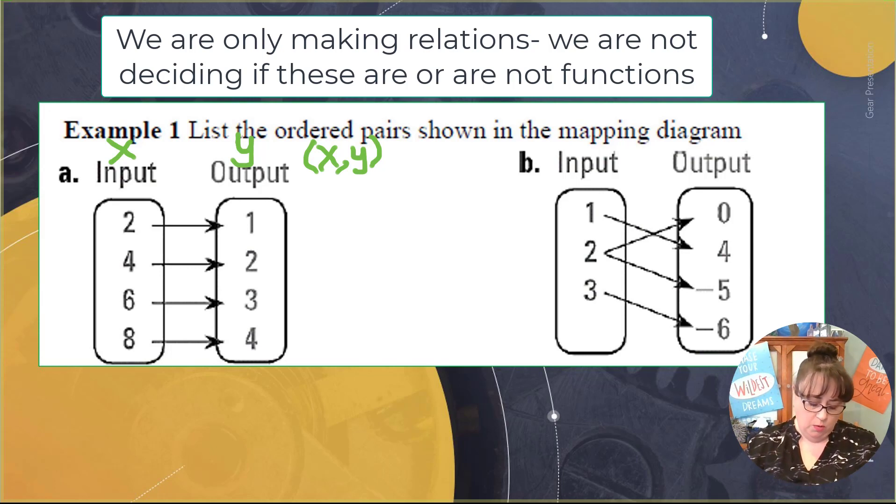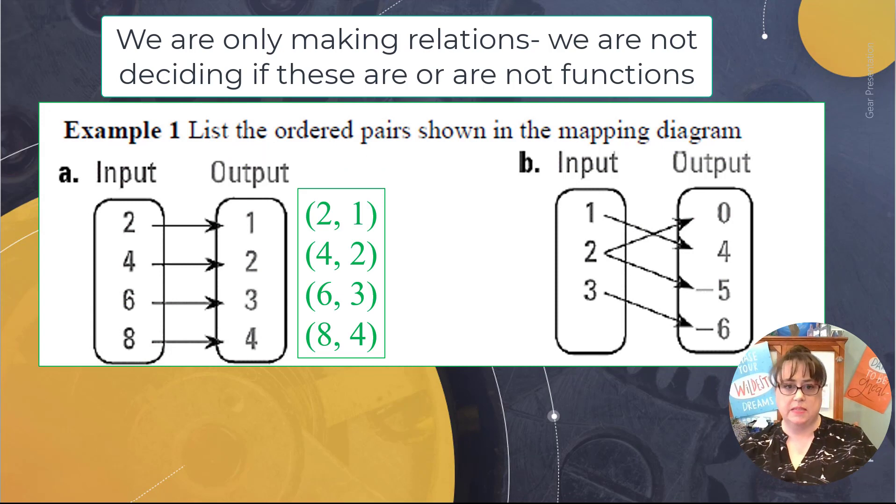So the first one would be 2 comma 1. And then you will continue on 4 comma 2, 6 comma 3, and 8 comma 4. Until they looked like this. The next one, we're going to do it in the exact same way, paying attention to where the arrows go to.